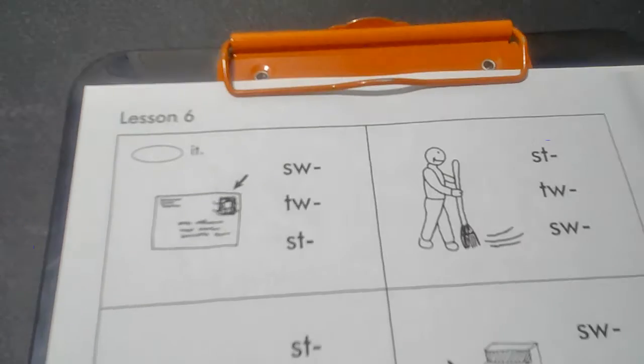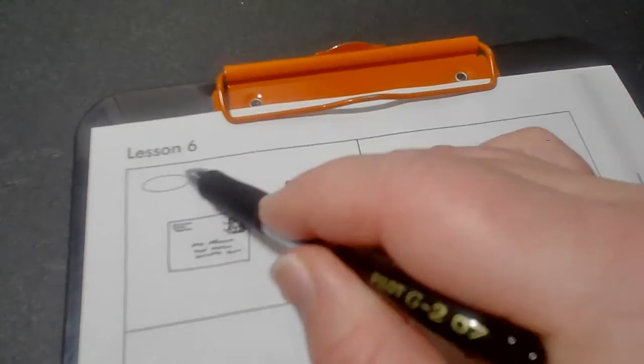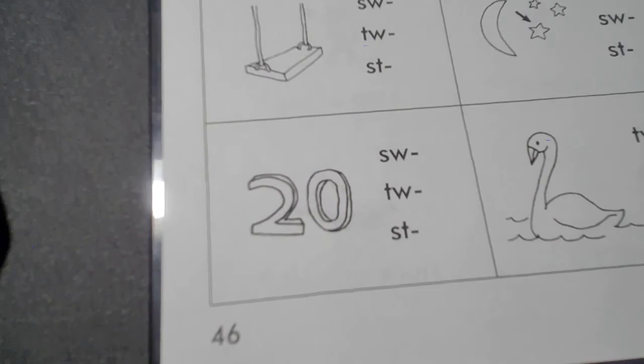Today we are going to first circle it. So make sure you have the page that says lesson six on the top. It is page 46 on the bottom.